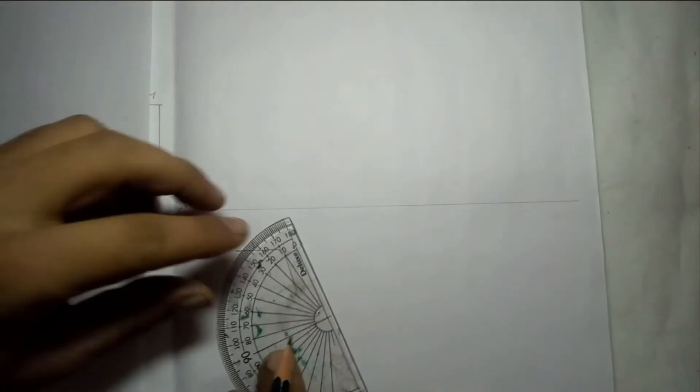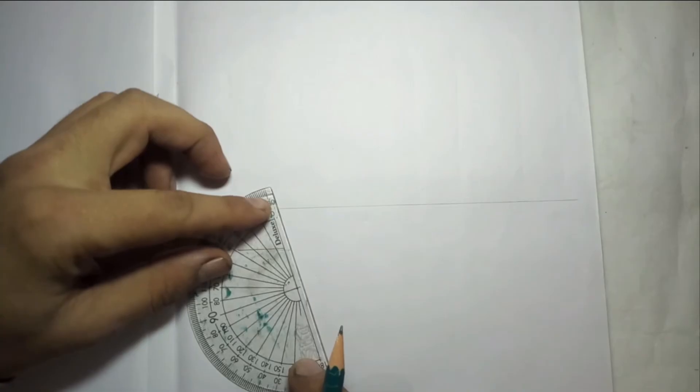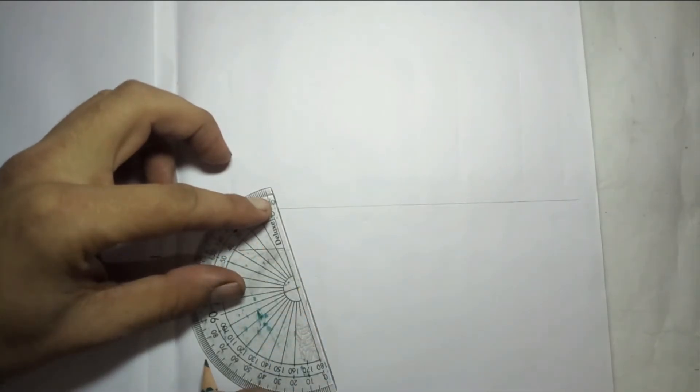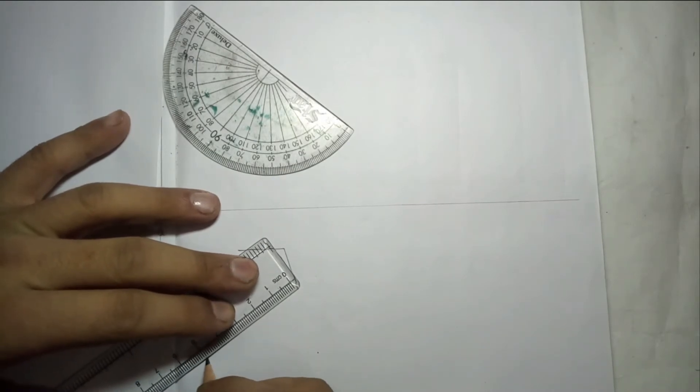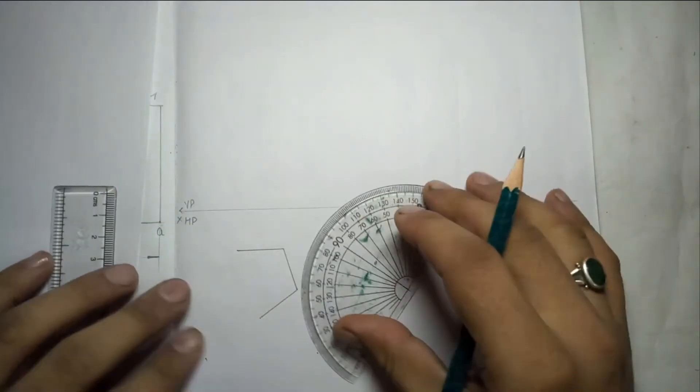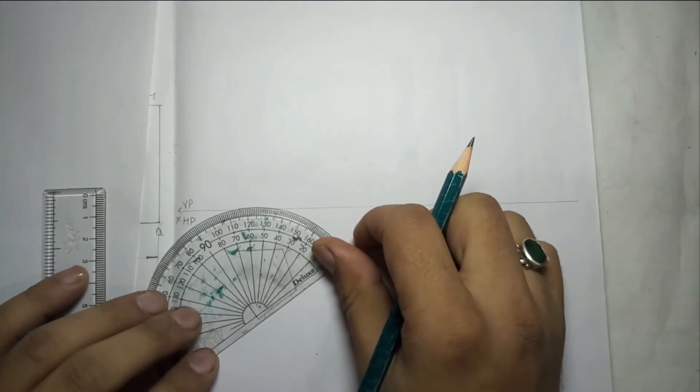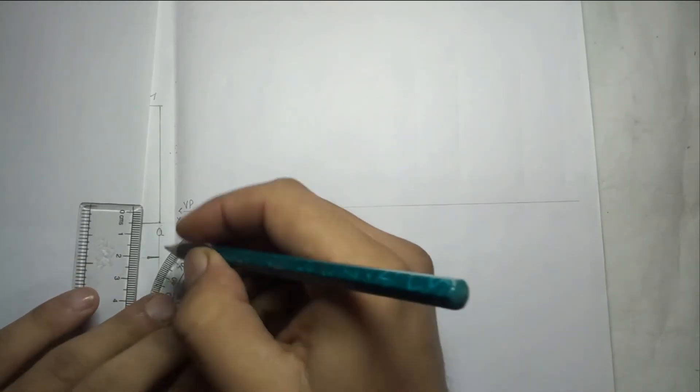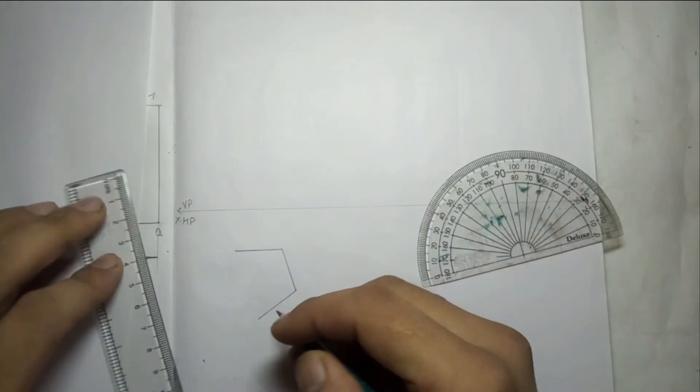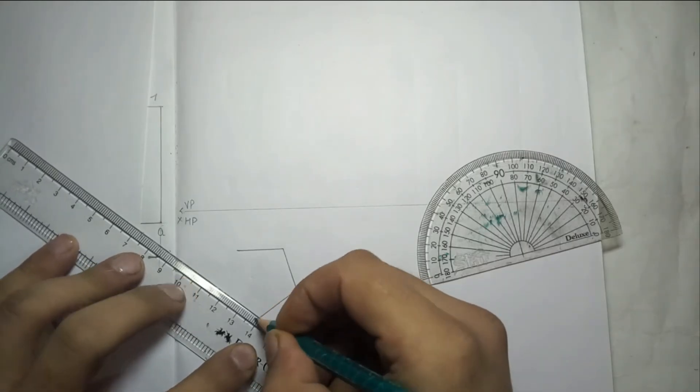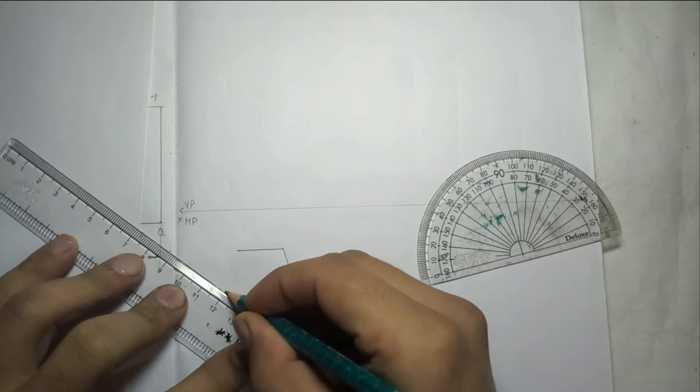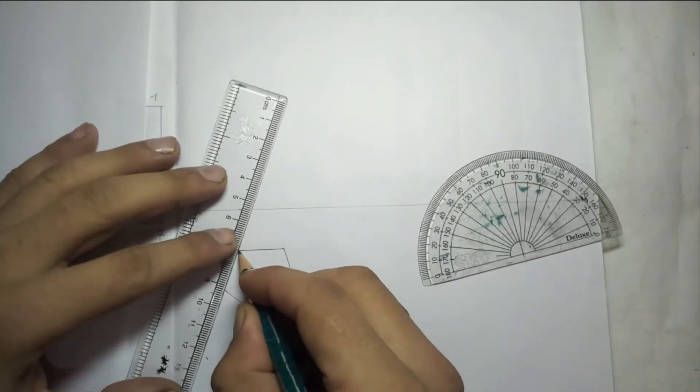Then put the protector on this side. From this point, 108 degrees, so 110 minus two. This is 108 degrees. Again you have to take 108, 108 degrees, and mark 20mm.